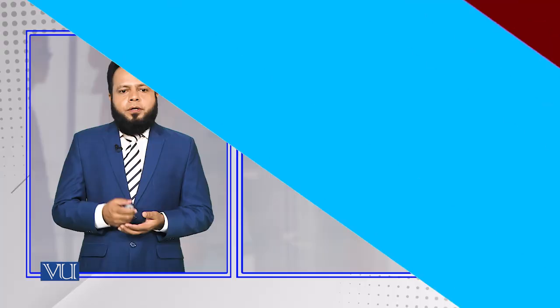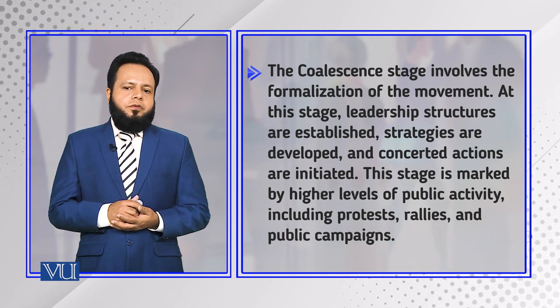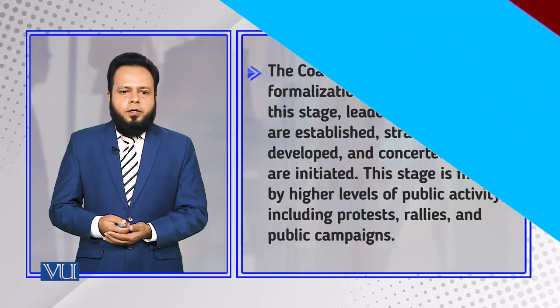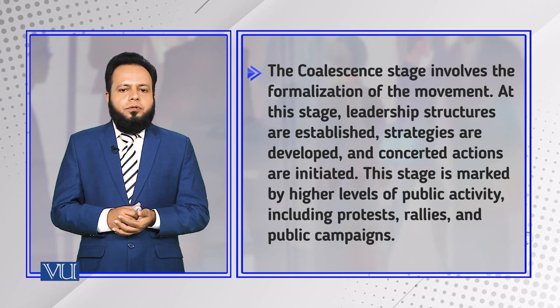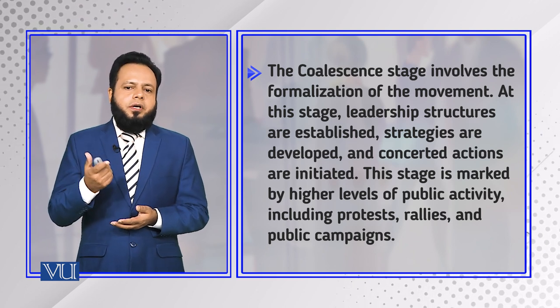People begin to talk about it and raise their concerns. Then we have the coalescence stage, which involves the formalization of the movement. At this stage, leadership structures are established. It's the second stage where people begin to have a shared consensus that we need to do something about this situation. They begin to have more frequent interaction about the issue, and a certain kind of leadership to lead the movement emerges. Different strategies are developed and concerted actions are initiated. This stage is marked by high levels of public activity, including protests, rallies, and public campaigns.